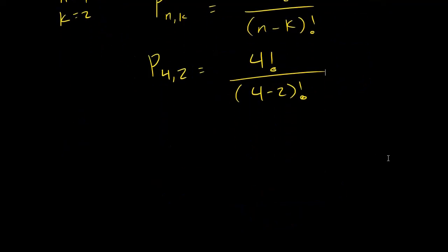So what is factorial? You multiply four times three times two times one. You multiply the first integer by every previous integer until you get one. Four minus two is two. So I'd have two factorial on the bottom.